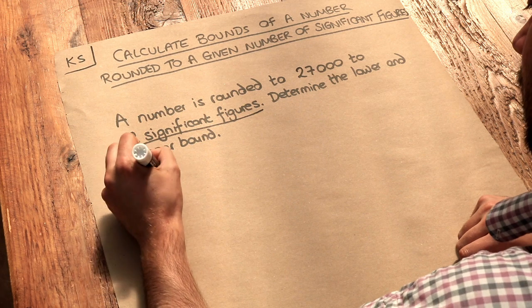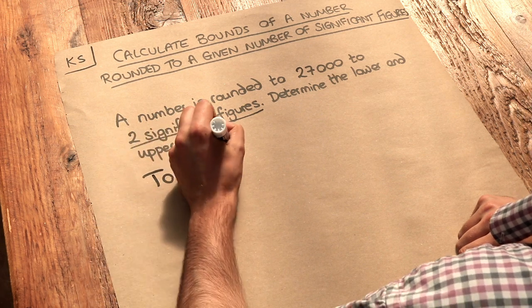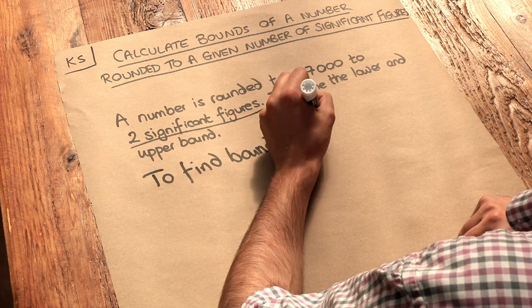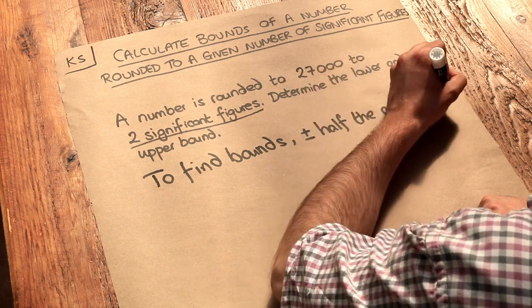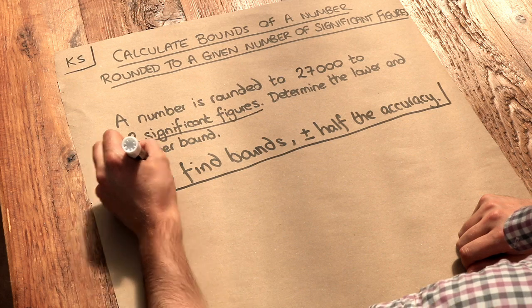So let me write that down. To find bounds, we add or subtract half the accuracy. And we also saw in those videos why this works.